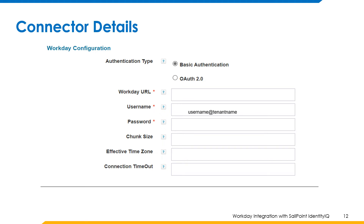Workday URL: the valid URL to connect to the human resource module of Workday. Username: the name of the administrative user, which should generally follow the format username at tenant name. Password: the password of the administrator user. Chunk size: the number of accounts to be fetched per page, with a limit from 1 to 999. Effective time zone: enter the time zone of your primary HR business operations.